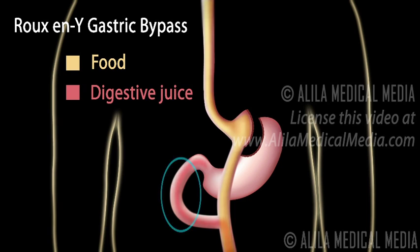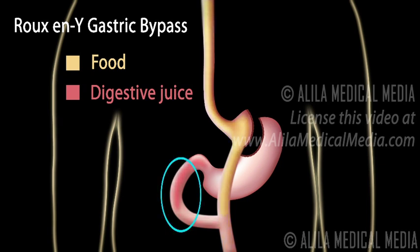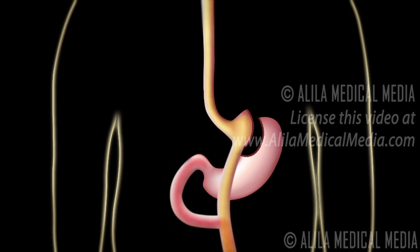Secondly, as the first part of the intestine, the duodenum, is bypassed, the amount of nutrition absorbed by the body is greatly reduced. In normal digestion, this is where most of the nutrition is absorbed. Malabsorption contributes to the weight loss effect.